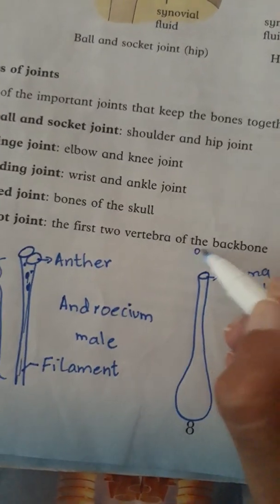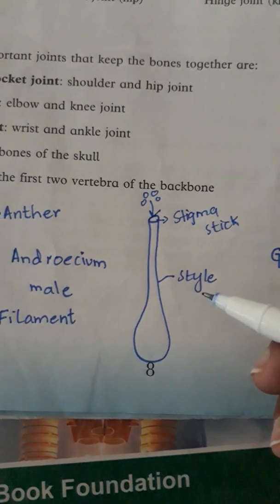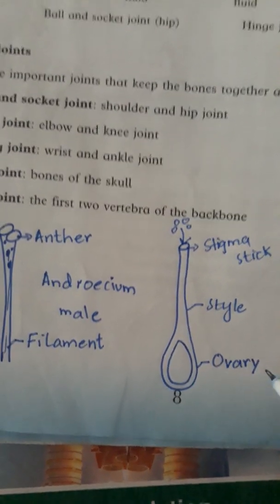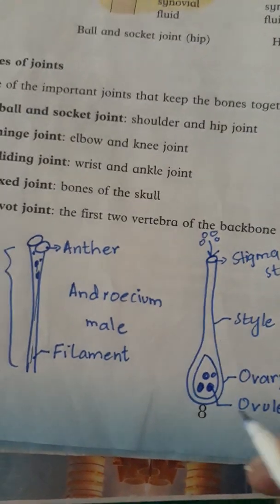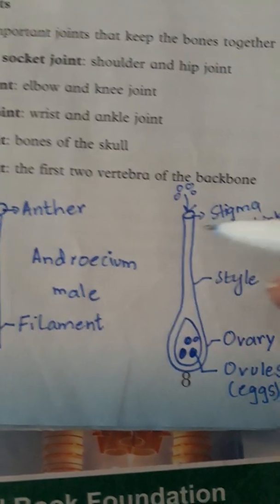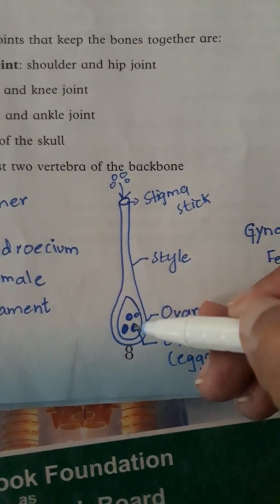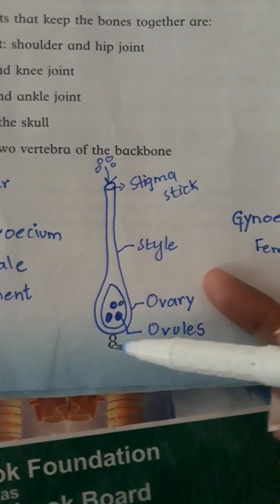When pollen grains drop and land on the stigma, they will travel through a long tube called the style into the ovary. This part is called the ovary, and inside the ovary small eggs are present — these are called ovules. Whenever the pollen grains fall on the stigma, they travel through the style into the ovary, where they fuse with the ovules. This process is called reproduction.